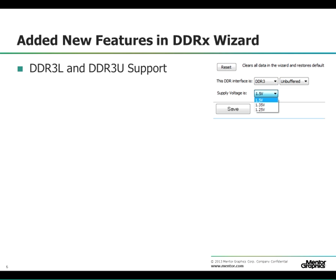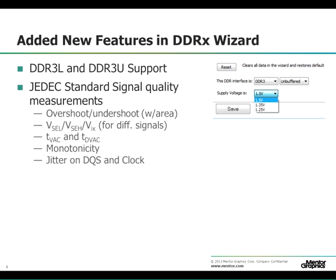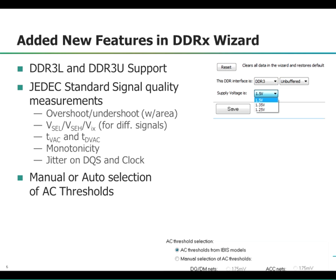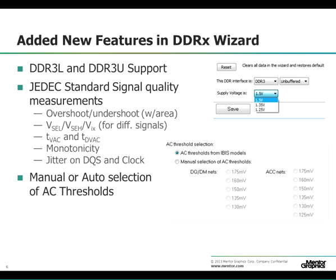The DDRX wizard in both LineSim and BoardSim now includes support for DDR3L and DDR3U. It also supports JEDEC standard signal quality measurements such as overshoot and undershoot with area. It lets you select the AC thresholds to be measured automatically from the IBIS file, or you can select manually. The AC threshold selected not only affects the measurement points but also changes the setup and hold requirements and derating table used.